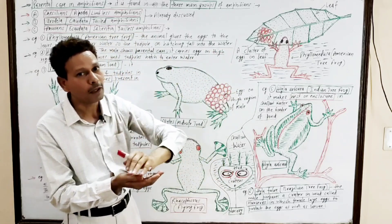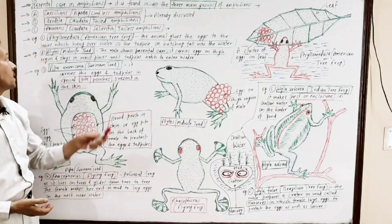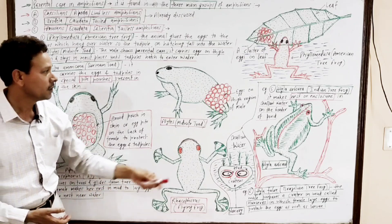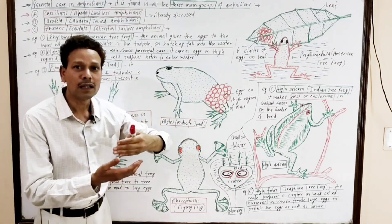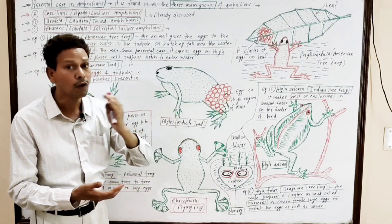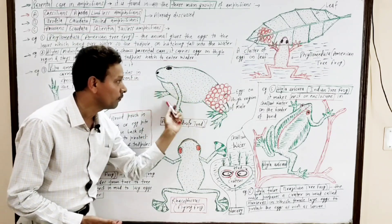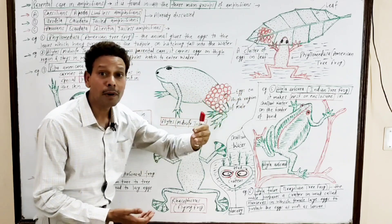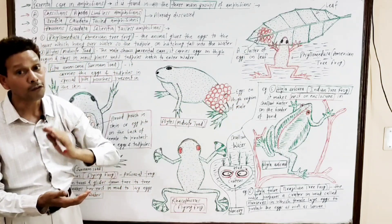The second example is Alytes, the midwife toad. In this diagram of the midwife toad, a cluster of eggs is carried by the male frog. In Alytes, the eggs are carried by the male and remain on the thigh region of the male frog.